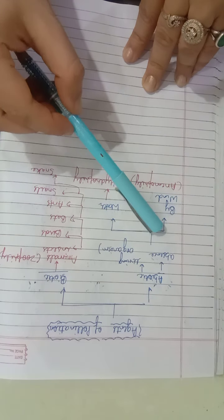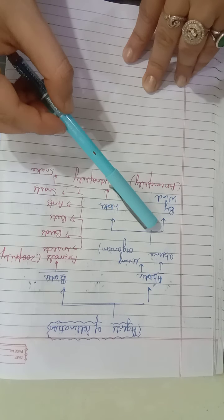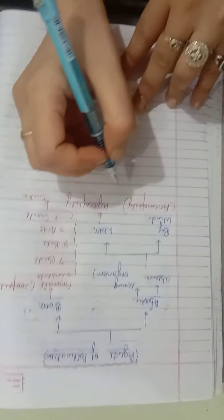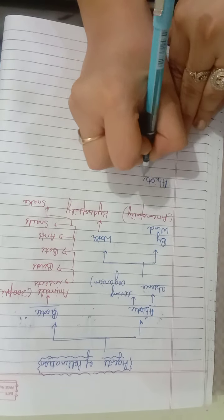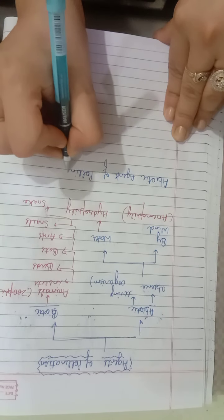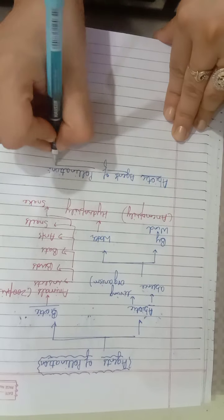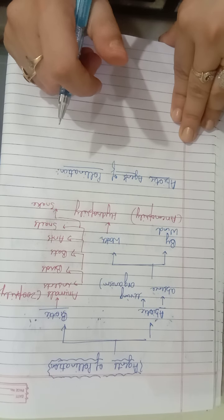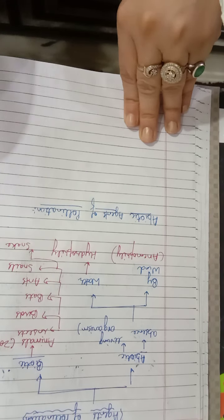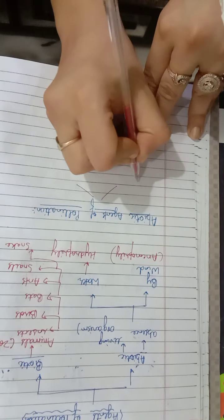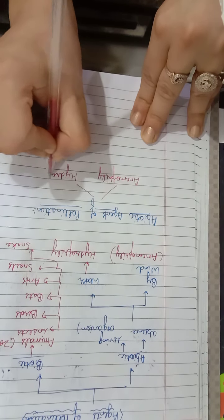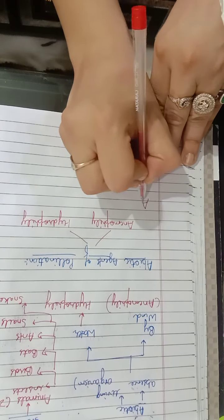First we will start with abiotic agent pollination — that is, we will study anemophily and hydrophily both. We start first with anemophily under abiotic agents of pollination.